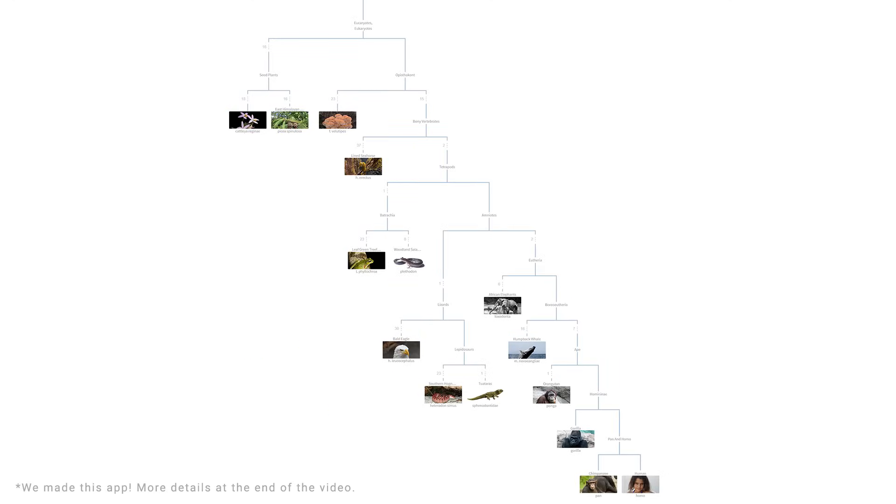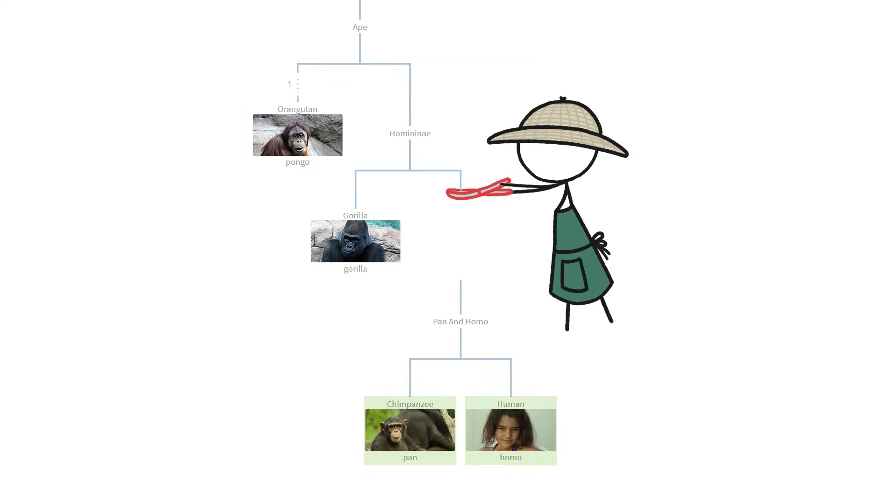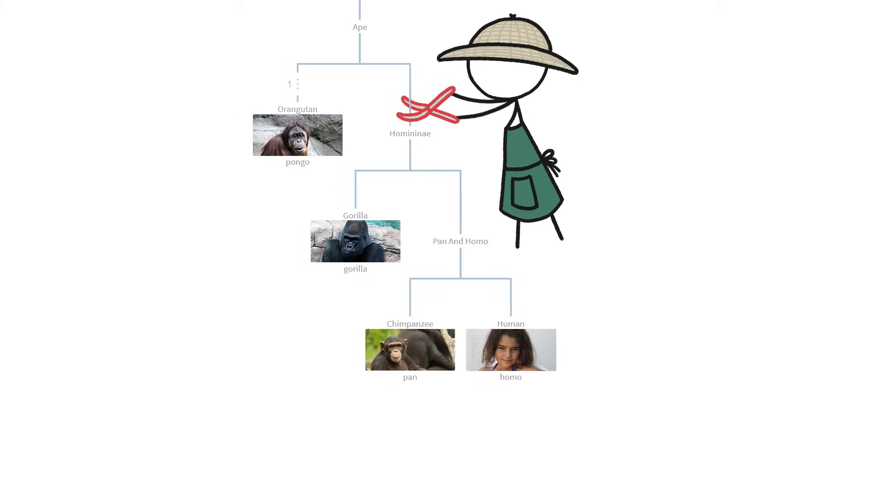For example, let's look at the great apes section of the tree of life. We could cut here and have a clade for humans and chimpanzees. This shows us that we're more closely related to chimpanzees than gorillas, because gorillas are left out. But we could also go up a bit and make a cut that includes gorillas too. This is a larger clade, and it shows us that we're more closely related to both chimpanzees and gorillas than orangutans.